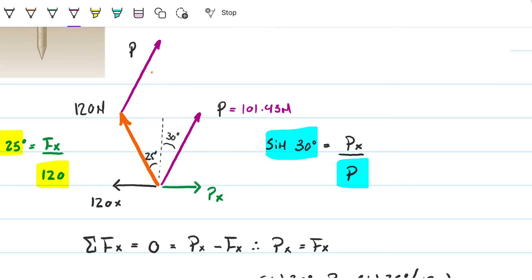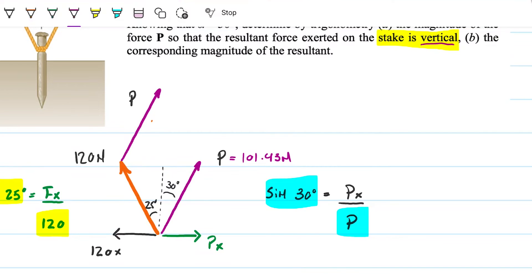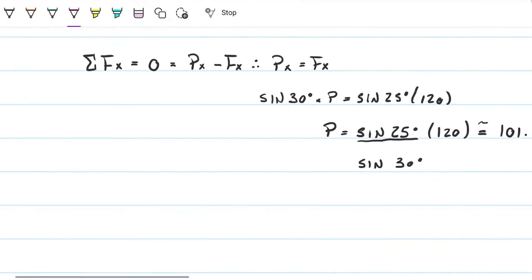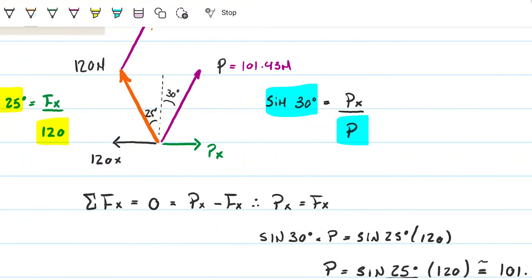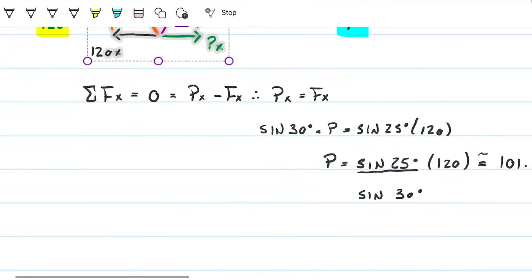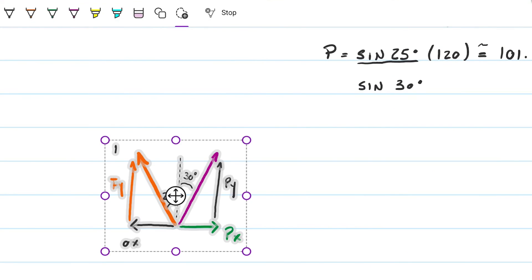So then the rest of the question is asking, okay, and by the way, what is the corresponding magnitude of the resultant? Well, to be able to do that, now we have to do the two other components that we haven't talked about. So one of them is the y component, so Fy. And on this side here, we have the y component on P, so Py.